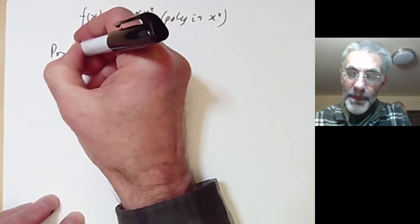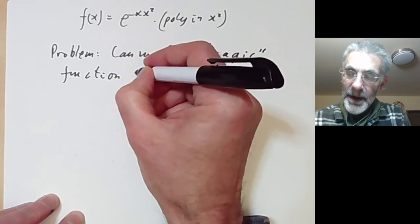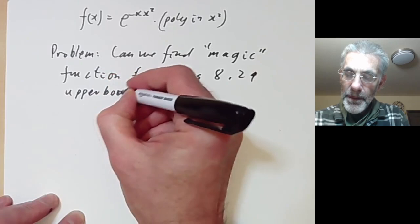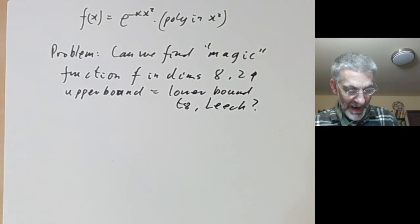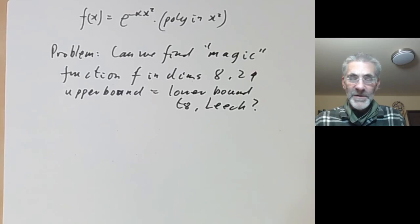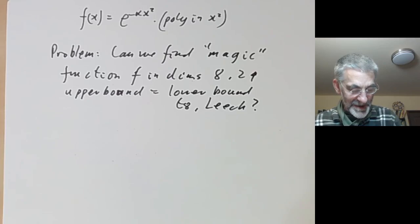They conjectured there was in fact a function showing that the best possible packing in dimension 8 and 24 is exactly the E8 or the Leech lattice. The problem: can we find some sort of magic function f in dimensions 8 and 24 so that the upper bound equals the lower bound given by those lattices? Henry Cohn went around asking many people this. He mentioned it to me — I thought about it for a few hours, got absolutely nowhere, tried a few ideas that all failed completely, and gave up. I imagine many others did much the same.